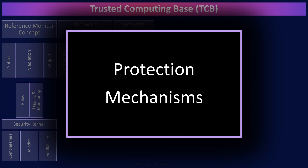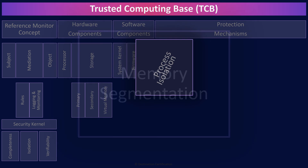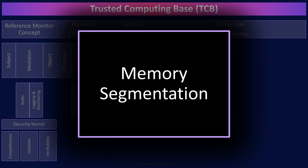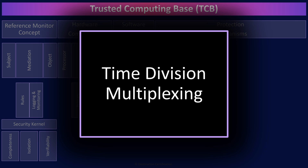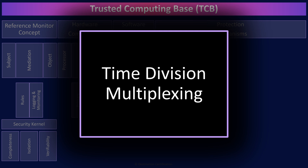The next major topic is protection mechanisms — the concepts and software techniques that we use to secure systems and enforce security policies. All modern-day systems are multitasking, meaning multiple applications can be running at the same time. From a security perspective, we must make sure that these processes are isolated so that one application cannot interfere with another. There are two major methods to achieve process isolation. Memory segmentation means each process is given its own memory space and is only allowed to access data in its own memory space. The second technique is time division multiplexing — giving each process access to a resource like the CPU or network card for a small slice of time, then taking control away and giving it to a second process, isolating them by only allowing access one at a time.